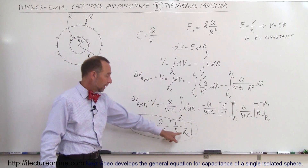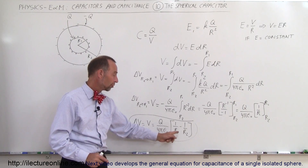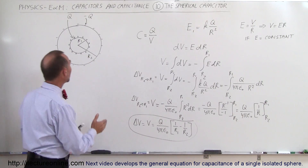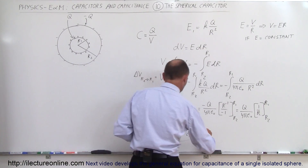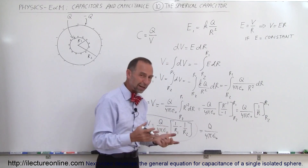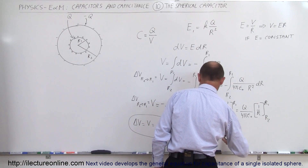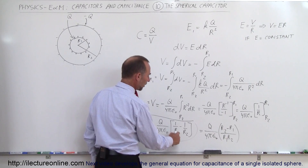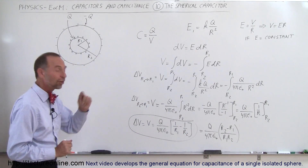We can also rewrite the potential in a slightly different form. Writing Q divided by 4π epsilon naught and combining the fractions with common denominator R1 times R2 gives R2 minus R1 over R1 times R2. So the potential can be written as Q over 4π epsilon naught times the quantity R2 minus R1 over R1 times R2.